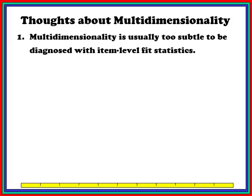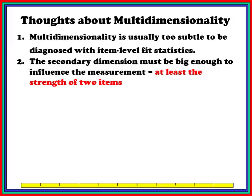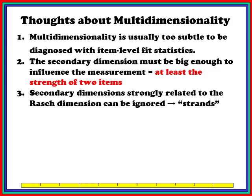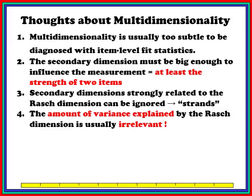Item-level fit statistics are too focused on individual items. The secondary dimension must be big enough to influence measurement — it must have at least the strength of two items, and usually quite a bit more. If it has only the strength of one item, it's just an idiosyncratic item, not really a dimension at all. Secondary dimensions strongly related to the Rasch dimension can really be ignored — they're strands, like addition and subtraction on an arithmetic test. They can be interesting, but generally we ignore them.